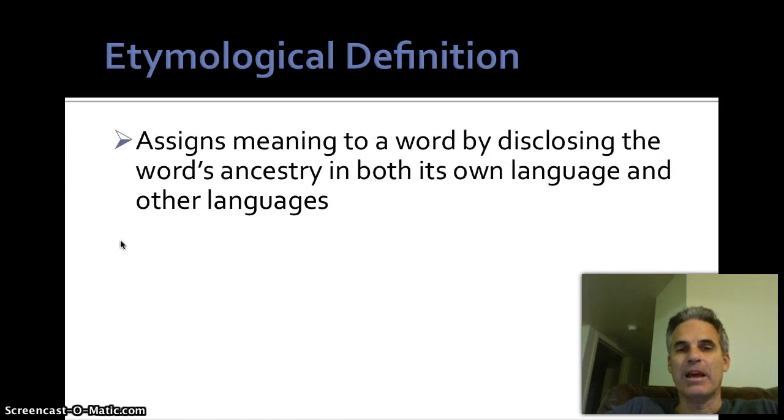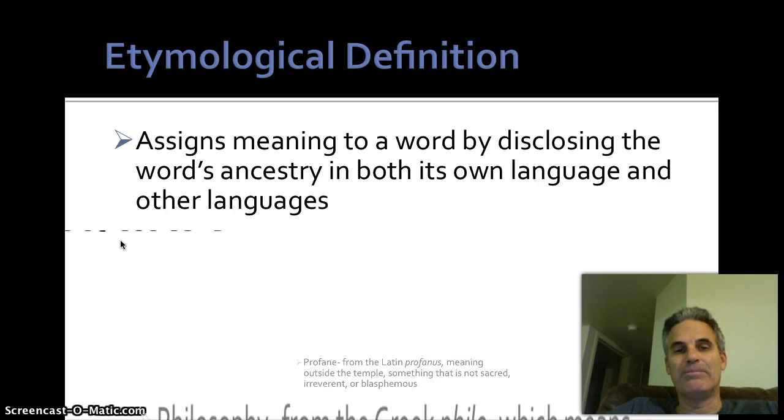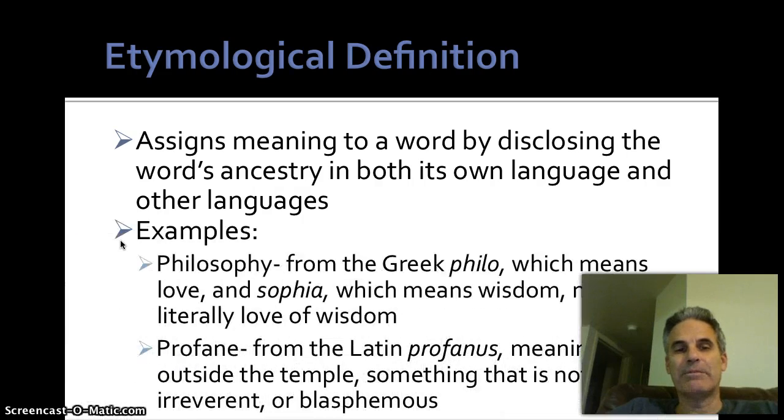Etymological. Etymological definition is we're defining a word by looking at the word's ancestry, either in its own language or other languages. We see this in dictionaries a lot, where they go back to the ancient Greek or Latin roots.